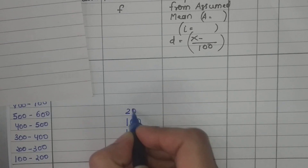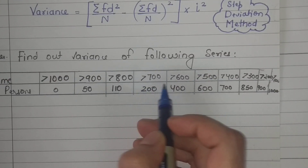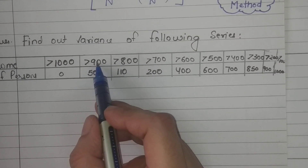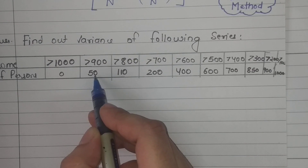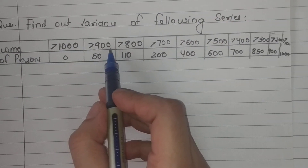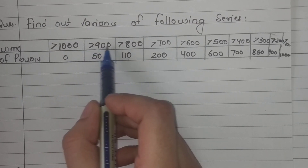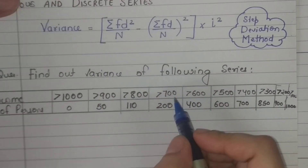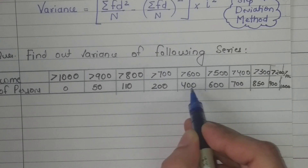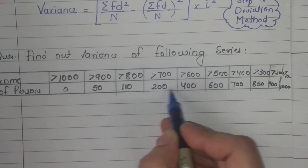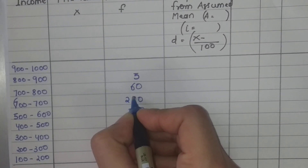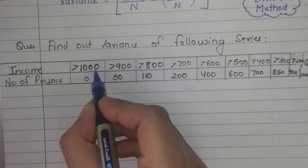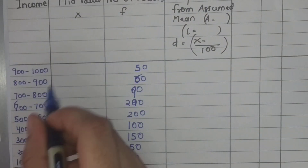Persons with income 700–800: 200. Income 800–900: 110 minus 50 = 60. Income 900–1000: 50 minus 0 = 50. By mistake a couple of intervals were skipped — income 500–600 and 600–700 both have 200 persons. So the frequency column reads: 100, 50, 150, 200, 200, 200, 90, 60, 50.